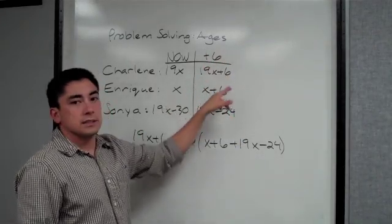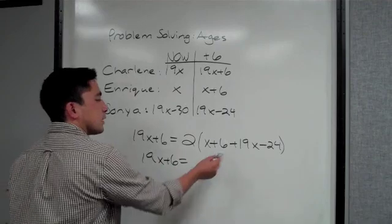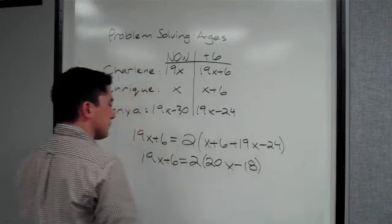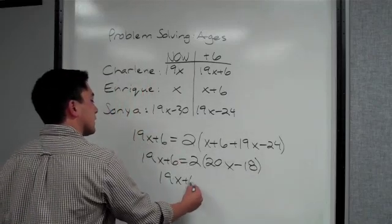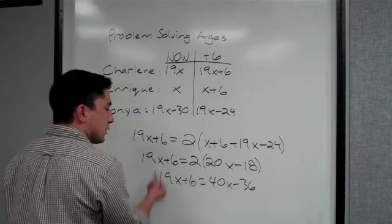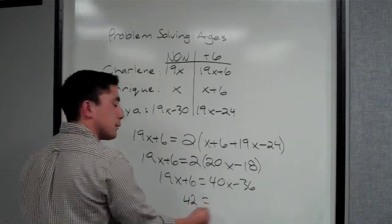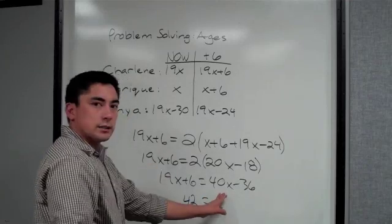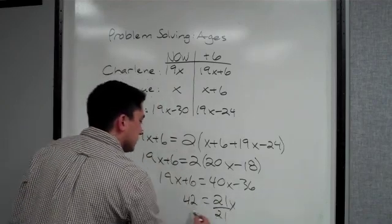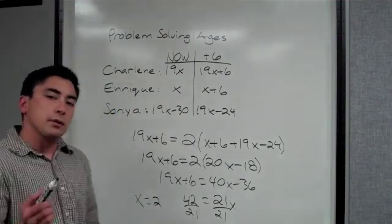Now we can just work it out. Here we have 19X plus 6. I'm going to combine like terms inside the parentheses, so that's 20X minus 18, and I distribute, so you get 19X plus 6 equals 40X minus 36. I'm going to add the 36 to the left side, which gives me 42, and I'm going to subtract the 19X from 40X, which gives me 21X. And lastly I divide by 21, and my answer is 2. X is equal to 2.